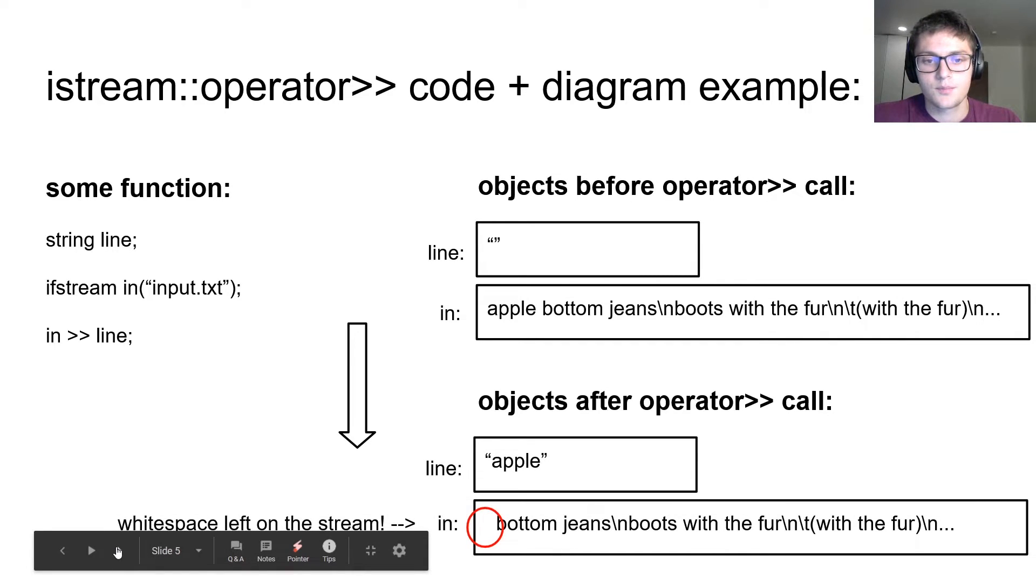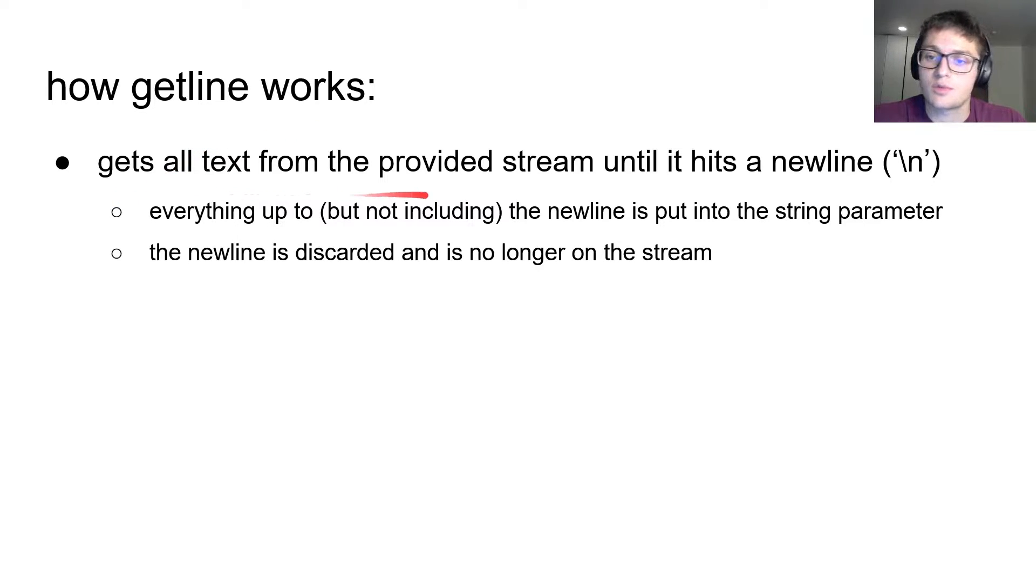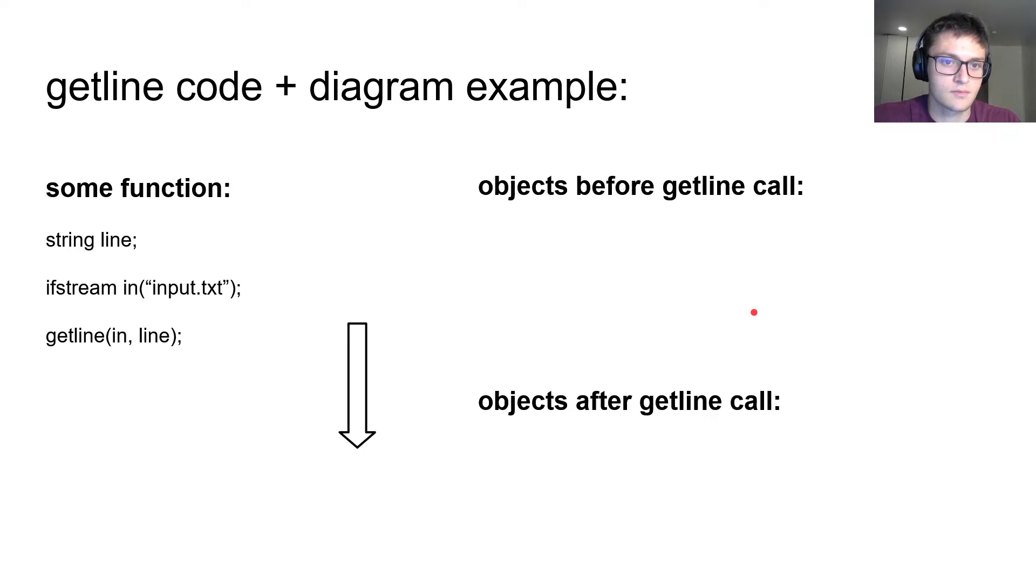However, this is how getline works. It gets all text from the provided stream until it hits a newline, and that is everything up to, but not including the newline, is put into the string that you pass to it. But the newline itself is not, the newline is discarded, and it isn't on the stream, but it also isn't in the string that you just passed to it. So we just throw away the newline, and whatever was after the newline is now the first character in the stream. And that's pretty easy, that's what everybody would expect from this function.